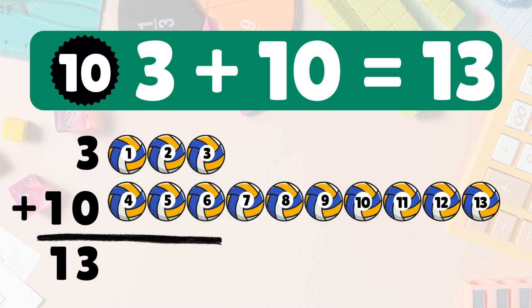Big one. Let's count all the way to thirteen. Ready? Go: one, two, three, four, five, six, seven, eight, nine, ten, eleven, twelve, thirteen.